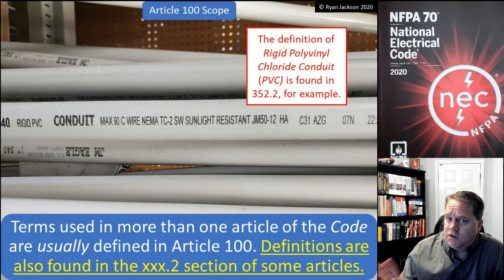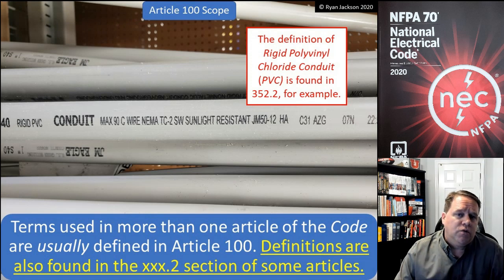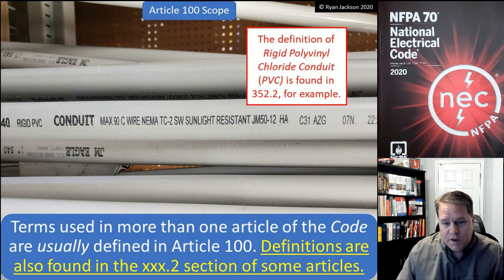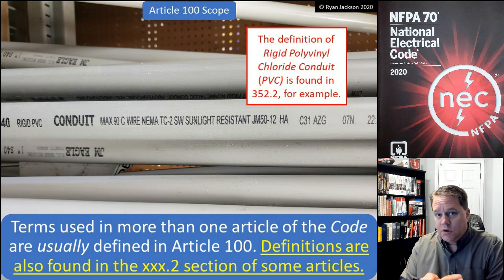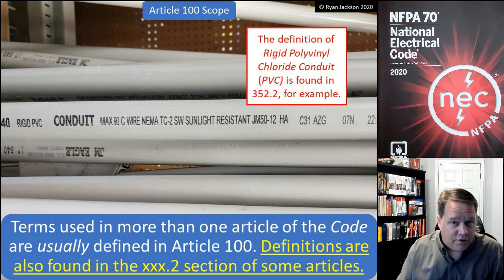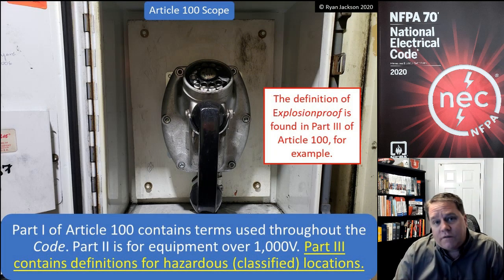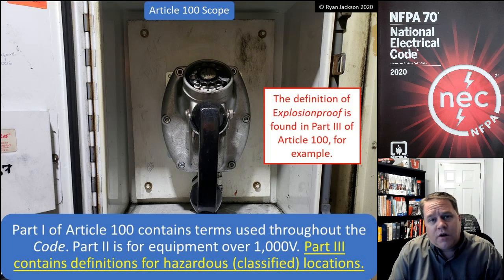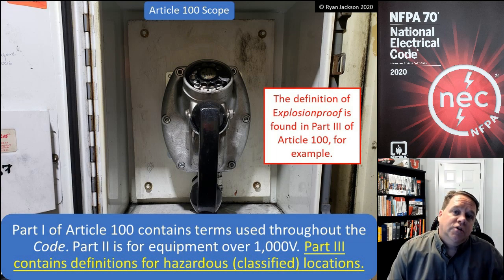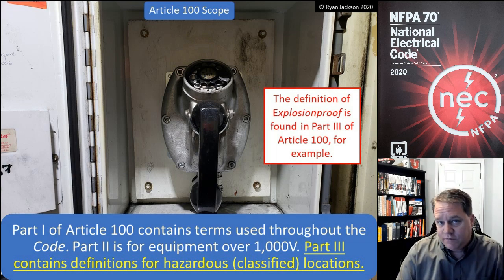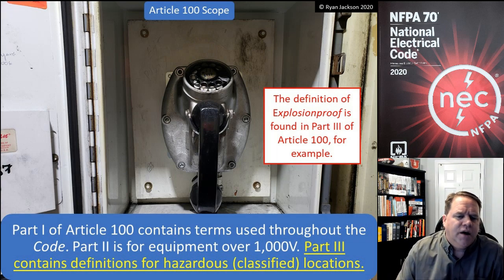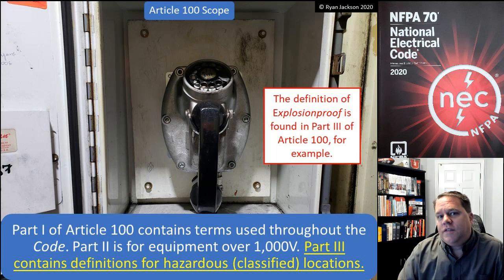They're going to change this in 2023. For right now, just know that if a term is used in more than one article, we define it in Article 100 for the most part; if it's only used in one article, we define it in that article. Part one of Article 100 contains definitions of terms used throughout the code. Part two is for terms used only above 1,000 volts — there are only about six or seven of them.